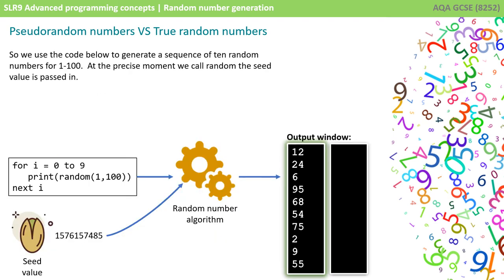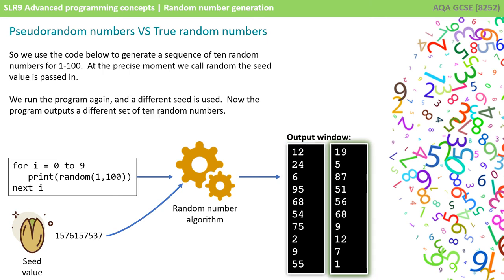So we use the code below to generate a sequence of 10 random numbers, and at the precise moment we call random, the seed value is passed in. That gets used in the calculation and generates the sequence of random numbers that you see in the output window. When I run the program again later, a different seed value is passed in. So the output now generates a different sequence of random numbers.